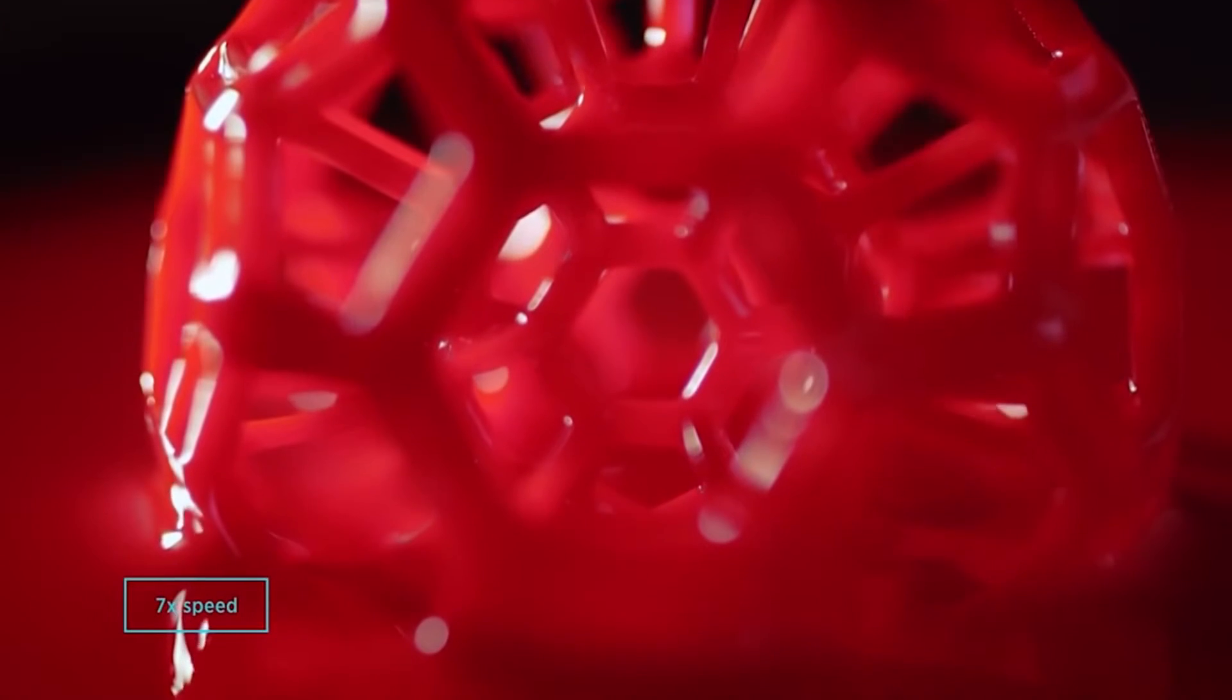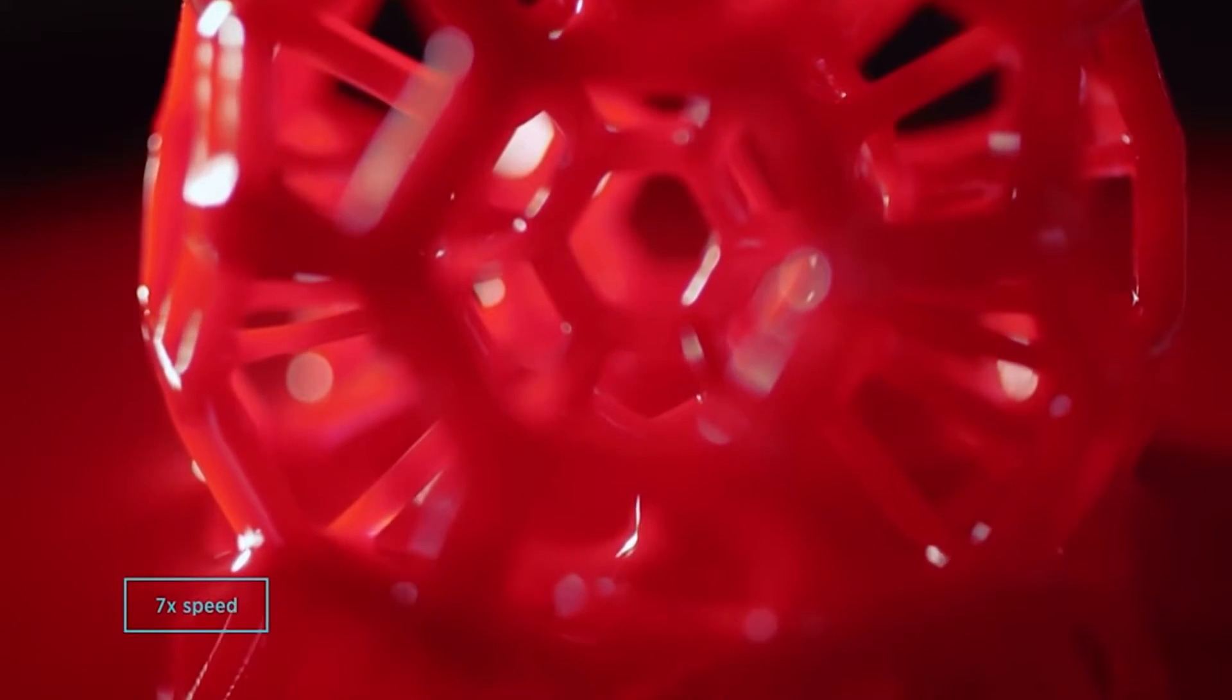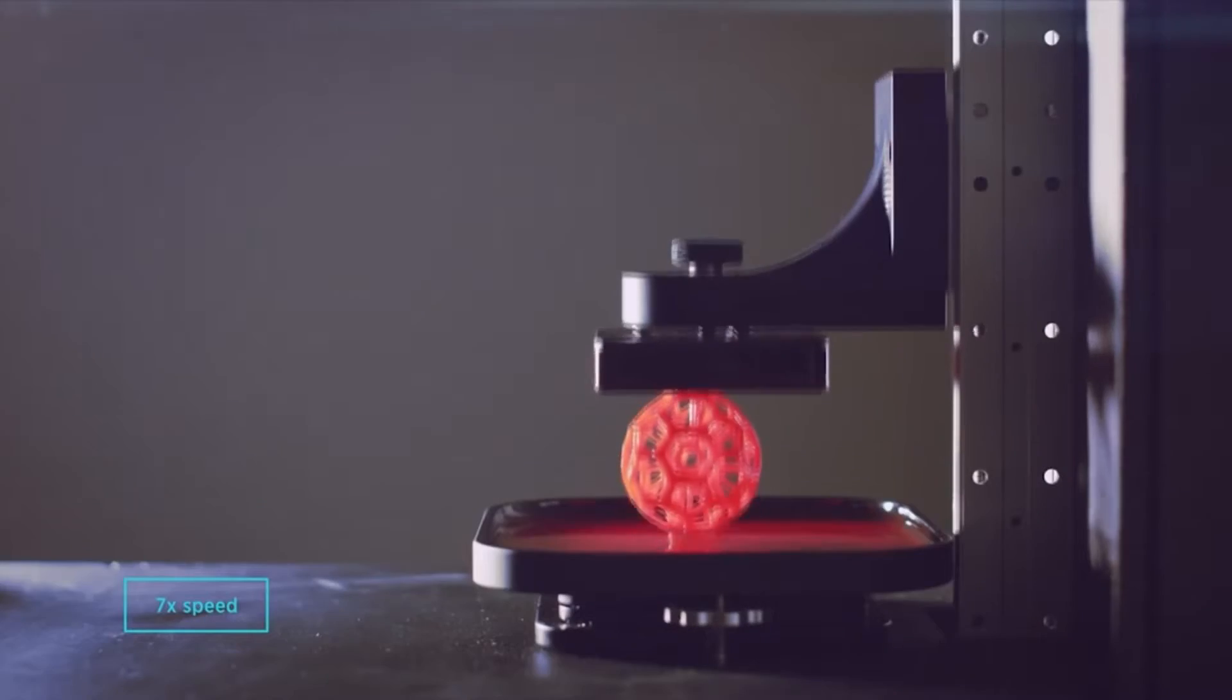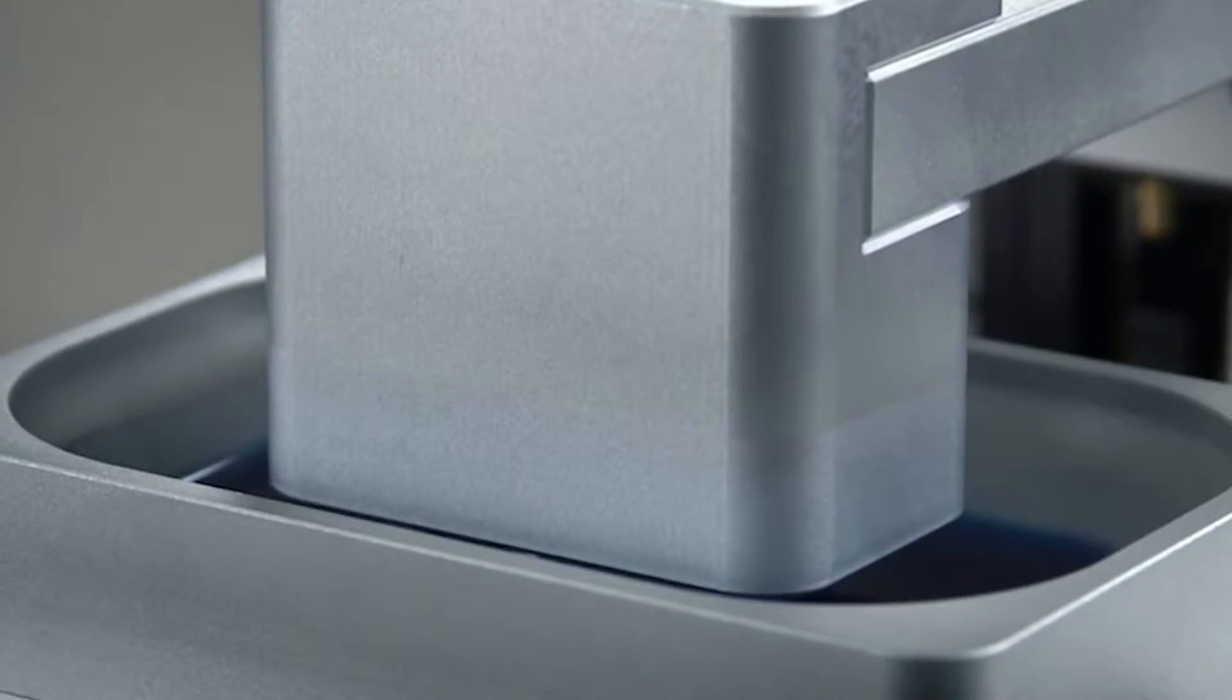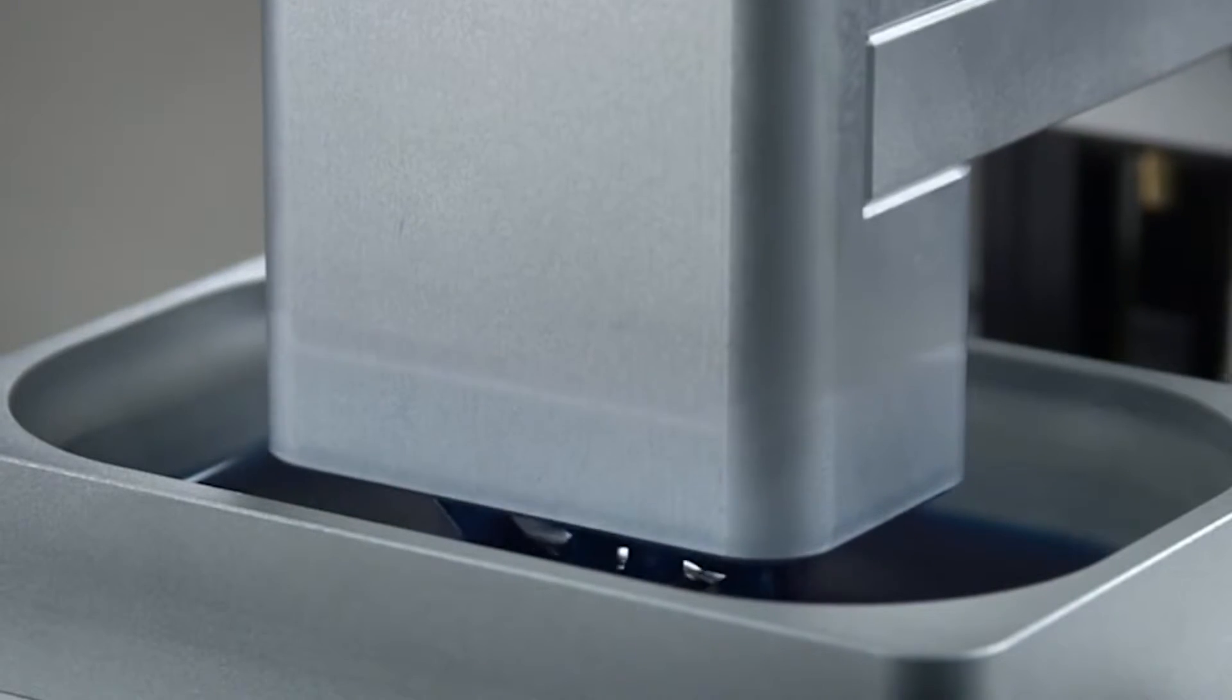The continuous process begins with a pool of liquid resin. Part of the pool bottom is transparent to the so-called window. An ultraviolet light beam shines through the window, illuminating the precise cross-section of the object.